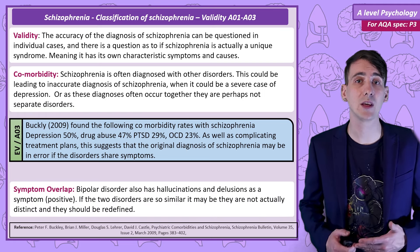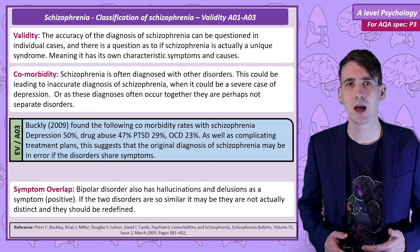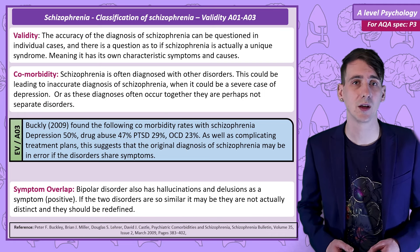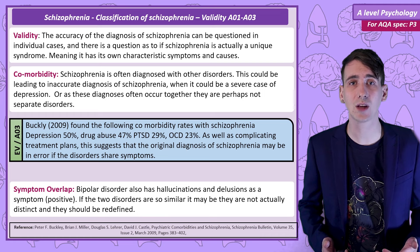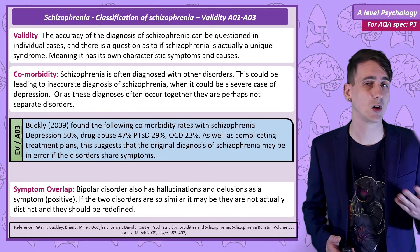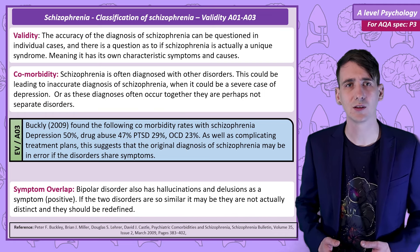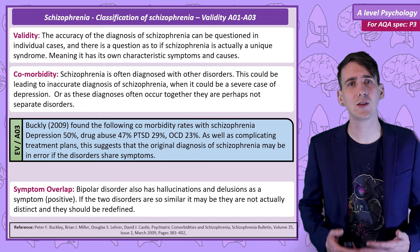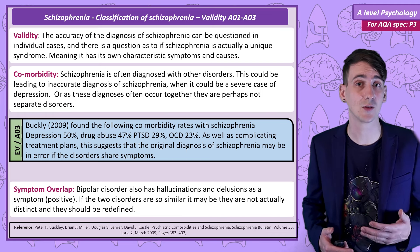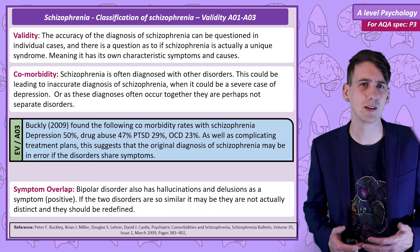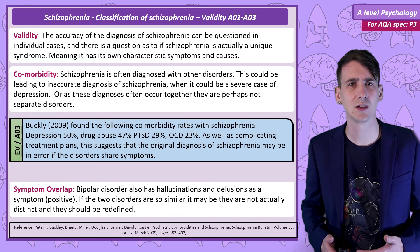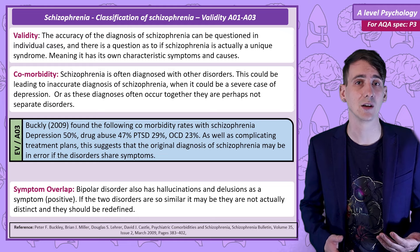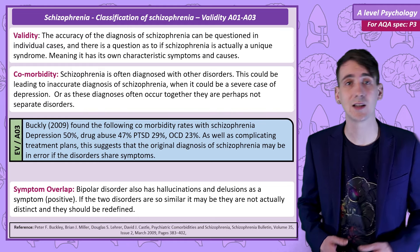Similar to that point, we have the issue of symptom overlap. A number of mental health conditions share the same symptoms as schizophrenia — people with a diagnosis of bipolar disorder, for example, can have both the positive symptoms of hallucinations and delusions. The fact that there is such significant symptom overlap leads us to question whether bipolar and schizophrenia are actually two separate and distinct mental health conditions, perhaps undermining the validity of schizophrenia as a diagnosis.